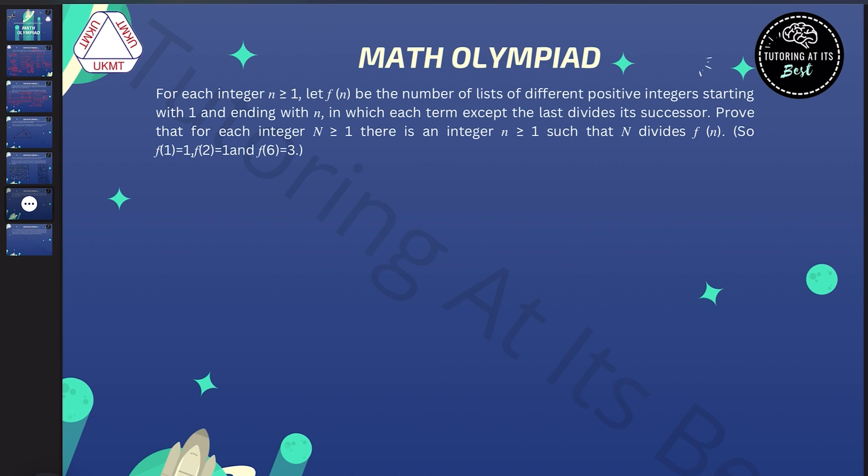Question number five. For each integer where n is greater than or equal to one, let f(n) be the number of lists of different positive integers, starting with one and ending with n.